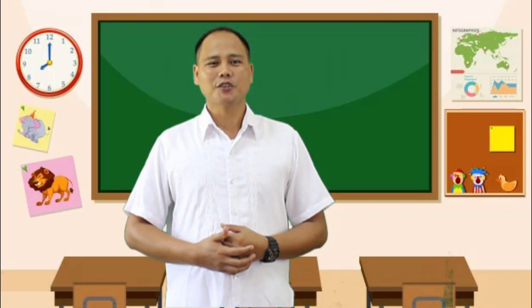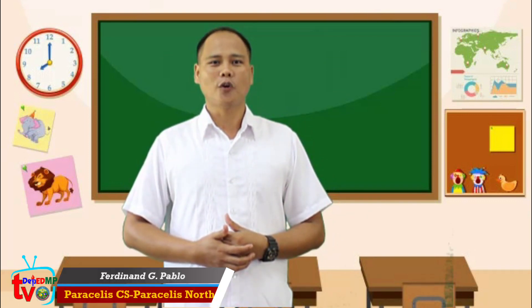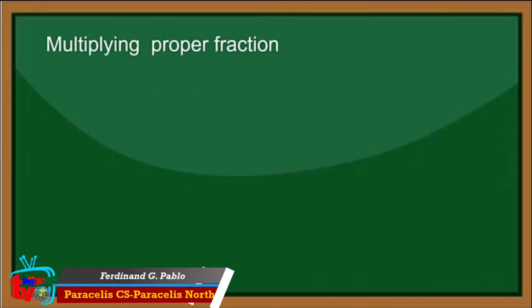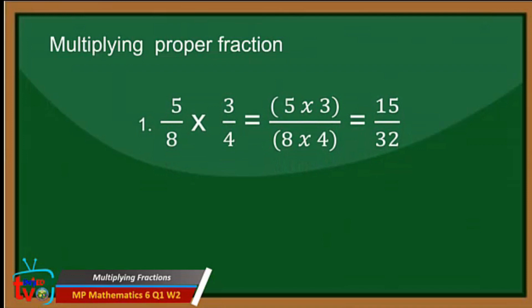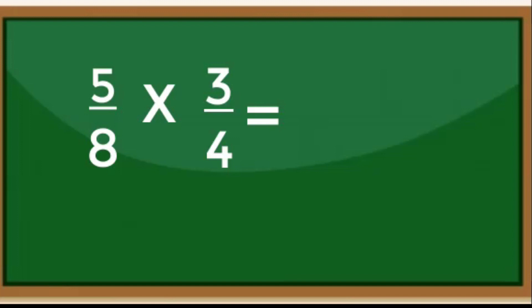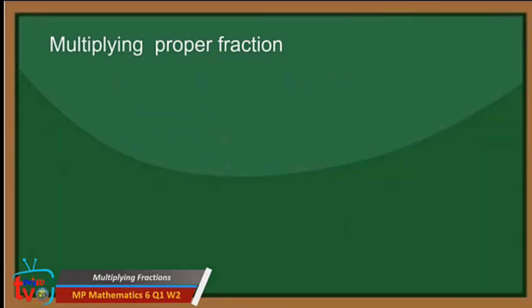Now that you are refreshed about fractions, you are now ready to multiply fractions in different forms. Let us take this example. We are going to multiply proper fractions. Example: 5 over 8 times 3 over 4. These are all proper fractions because the numerator is less than the denominator. So, 5 times 3 is equal to 15, and 8 times 4 is equal to 32. So 5 over 8 times 3 over 4 is equal to 15 over 32.